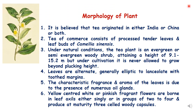It is believed that tea originated either in India or China, or both. Tea of commerce consists of processed tender leaves or leaf buds of Camellia sinensis. Under natural conditions the tea plant is an evergreen or semi-evergreen woody shrub which can attain a height of 9.1 to 15.2 meters, but under cultivation it is never allowed to grow beyond plucking height, as that would make plucking difficult.